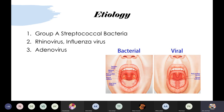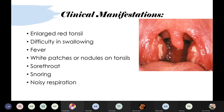In viral tonsillitis, there will be red swollen tonsils and throat redness. White patches will mostly not be present. The white furry coating will be on the sides of the tongue rather than the center. This helps you distinguish between bacterial and viral tonsillitis.